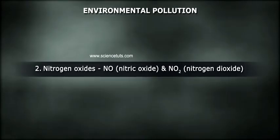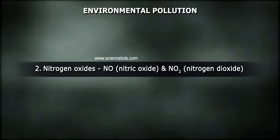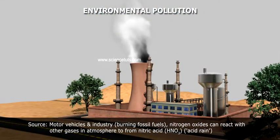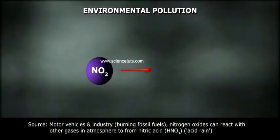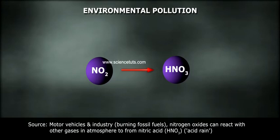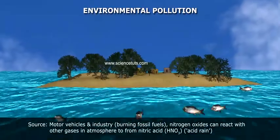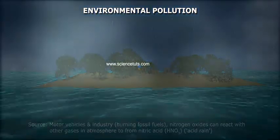2. Nitrogen Oxides — NO (Nitric Oxide) and NO2 (Nitrogen Dioxide). Source: motor vehicles, industry, and burning of fossil fuels. Nitrogen oxides can react with other gases in the atmosphere to form nitric acid (HNO3), contributing to acid rain.